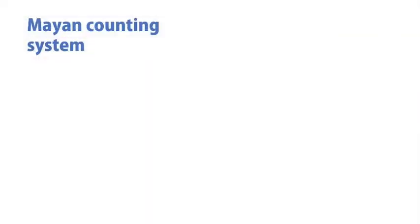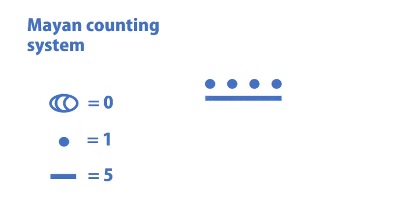Let's take the Mayan counting system, which dates back to around 250 AD. It involves a system of lines, dots, and shells. The numbers 1 through 4 are represented by dots, and groups of 5 are represented by lines. That means in one group you can get up to the number 19. Anything bigger than 19 would use positional notation.